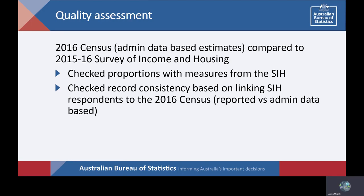Before I showcase the results of this research, a quick word on quality assessment. The three additional income topics created at person and household level were compared with similar measures from the ABS Survey of Income and Housing conducted throughout 2015-16. The SIH is a household survey which collects detailed information on sources of income, amounts received, household net worth, housing, household characteristics and personal characteristics. While there are some key differences between the methodology of the census and the SIH, particularly different reference periods and scope, the SIH serves as a useful comparison to evaluate the experimental, administrative data-based measures for the census.